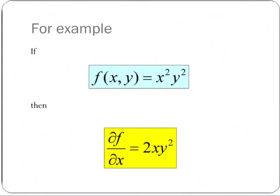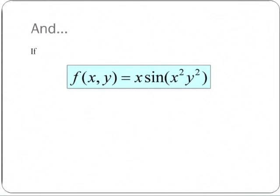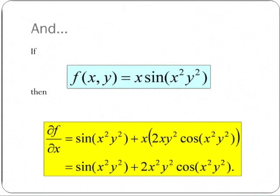And if f of x, y is x sin(x squared y squared), then using the product rule for differentiation, the partial derivative of f with respect to x is the derivative of x, which is 1, times sin(x squared y squared), plus x times the derivative with respect to x of sin(x squared y squared), which is 2xy squared cos(x squared y squared), giving sin(x squared y squared) plus 2x squared y squared cos(x squared y squared).